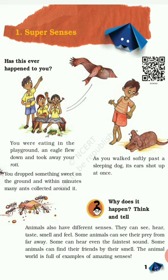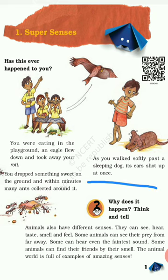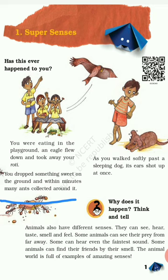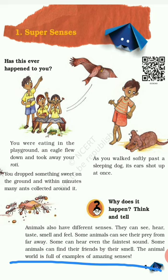Has this ever happened to you — you were eating in the playground and an eagle flew down and took away your roti? Or you walked softly past a sleeping dog so it might not get disturbed, but its ears shot up at once? Or you dropped some food on the ground and within minutes many ants collected around it? This happens because animals also have different senses.